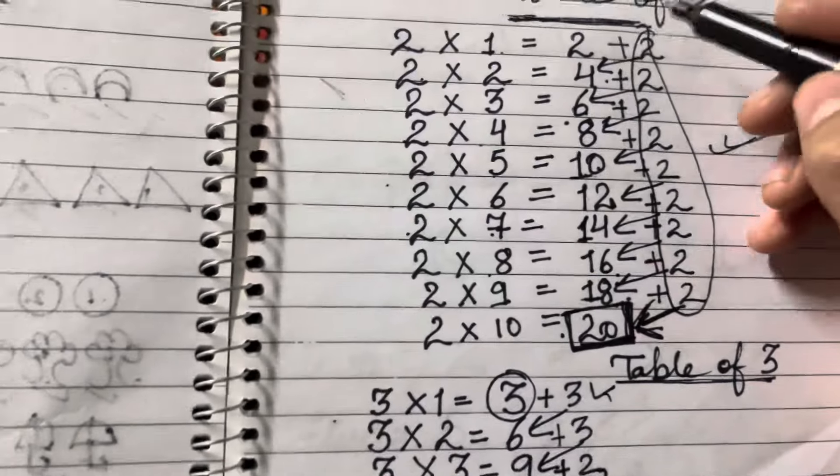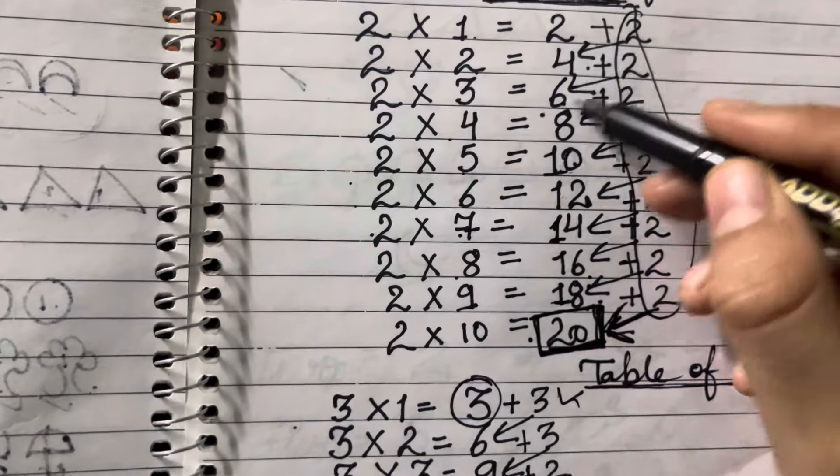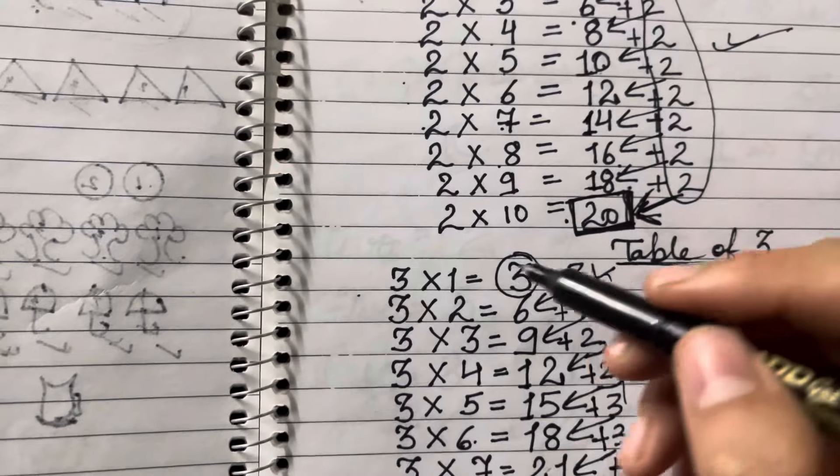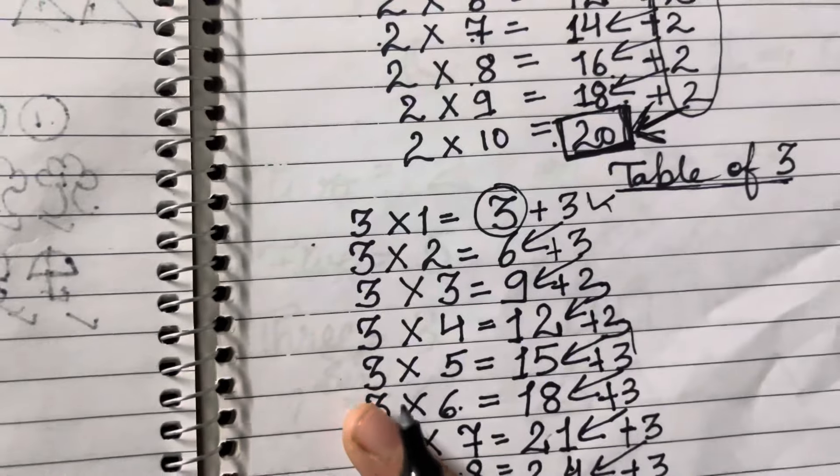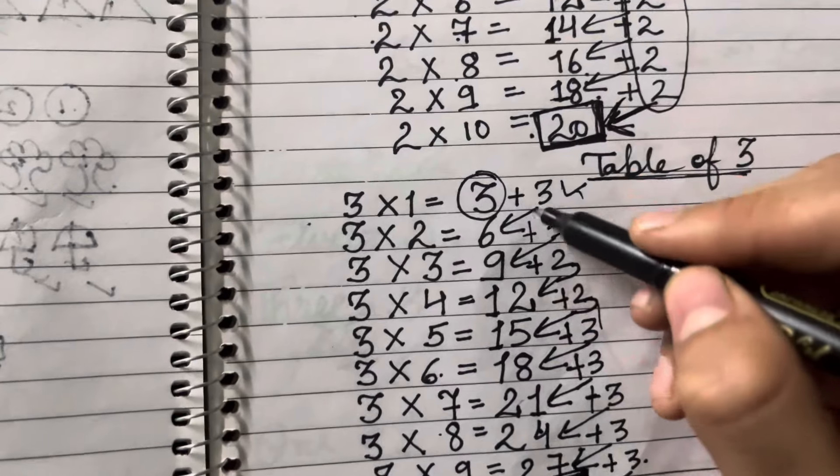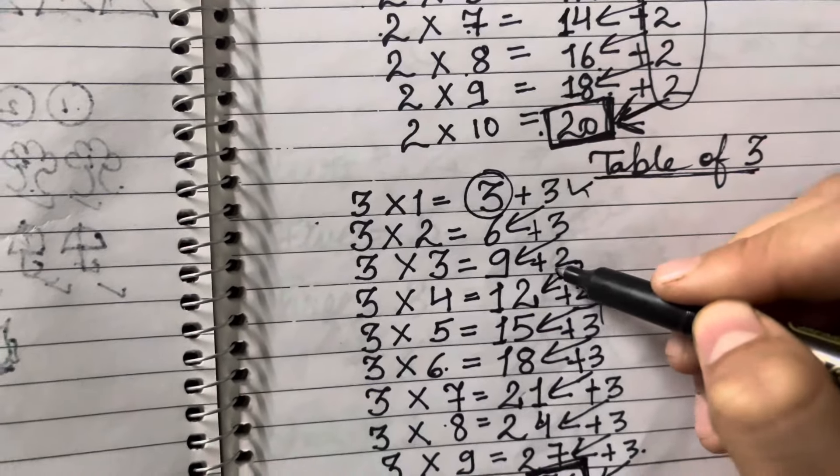We will start with table of 3. You can add 2 and get the next number so that you can write the table of 2, and as you have to do in 3, you will have to add 3 in each number so you will get the next number.